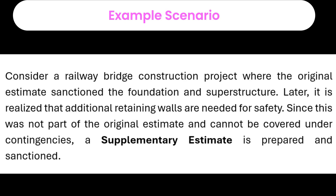For example, consider a railway bridge construction project where the original estimate sanctioned the foundation and superstructure. Later, it is realized that additional retaining walls are needed for safety. Since this was not part of the original estimate and cannot be covered under contingencies, a supplementary estimate is prepared and sanctioned.